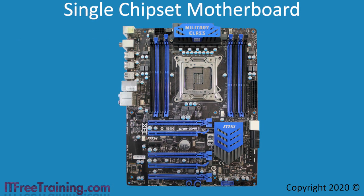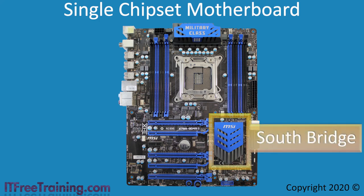On this motherboard, there is only the one chipset, which is easy to spot as it has a heatsink on it. Since the North Bridge functions are performed by the CPU, this chip is essentially the South Bridge. There is also a heatsink at the top of the motherboard with 'military class' written on it, which may lead you to think that this is the North Bridge. Remember, the North Bridge connects high-speed devices including memory, video cards or other high-speed devices, so the North Bridge will often be placed in close proximity to memory, the CPU and the video card. In this case, it is close to the memory and CPU but not the video card. I also had a look under the heatsink and there are a number of components for regulating power rather than being a single chip, so there is not a North Bridge under this heatsink. Once you start looking at more and more motherboards, you will get better at quickly spotting the North Bridge and South Bridge chipsets.